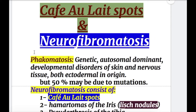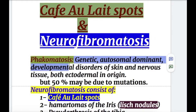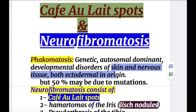Neurofibromatosis is a type of phacomatosis. What is phacomatosis? Phacomatosis is a group of genetic, autosomal dominant developmental disorders of skin and nervous tissue. Both of them are ectodermal in origin.